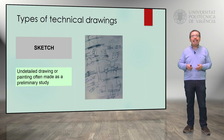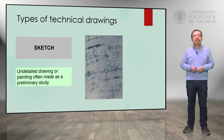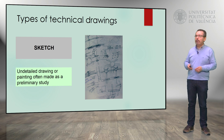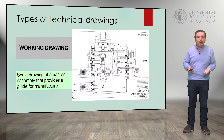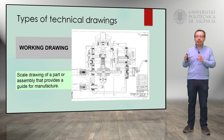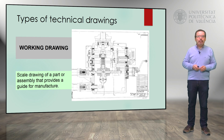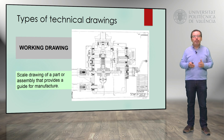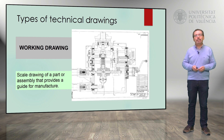A sketch, on the other hand, is an undetailed drawing or painting often made as a preliminary study. Here we have an example of that. This is the first stage of technical drawing, actually. Whereas a working drawing would be the last stage, or nearly the last stage, because it's a scale drawing of a part or assembly that provides a guide for manufacturing. As you can see here in the example, it's very detailed — it shows a lot of references and information because it serves for manufacturing.